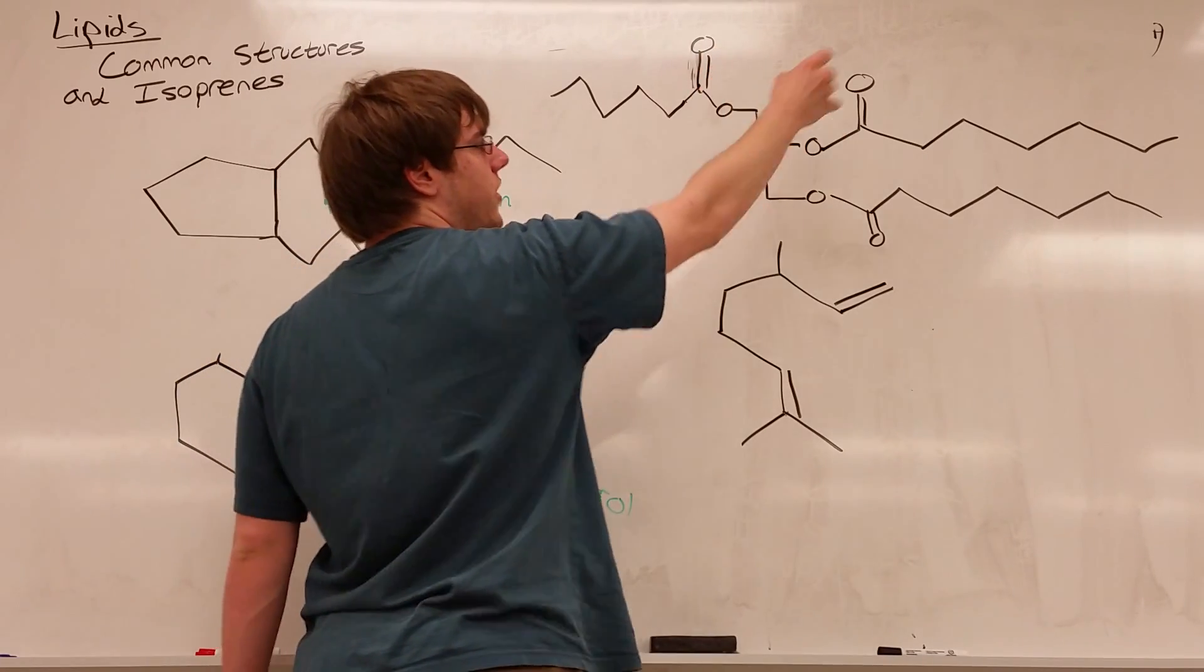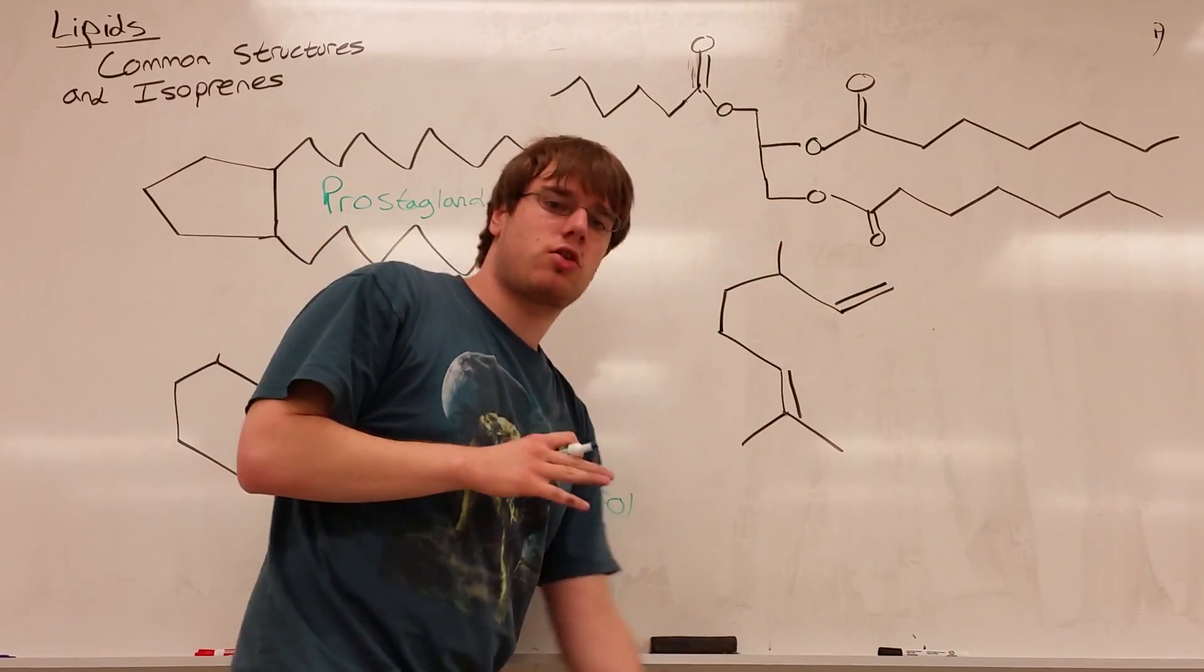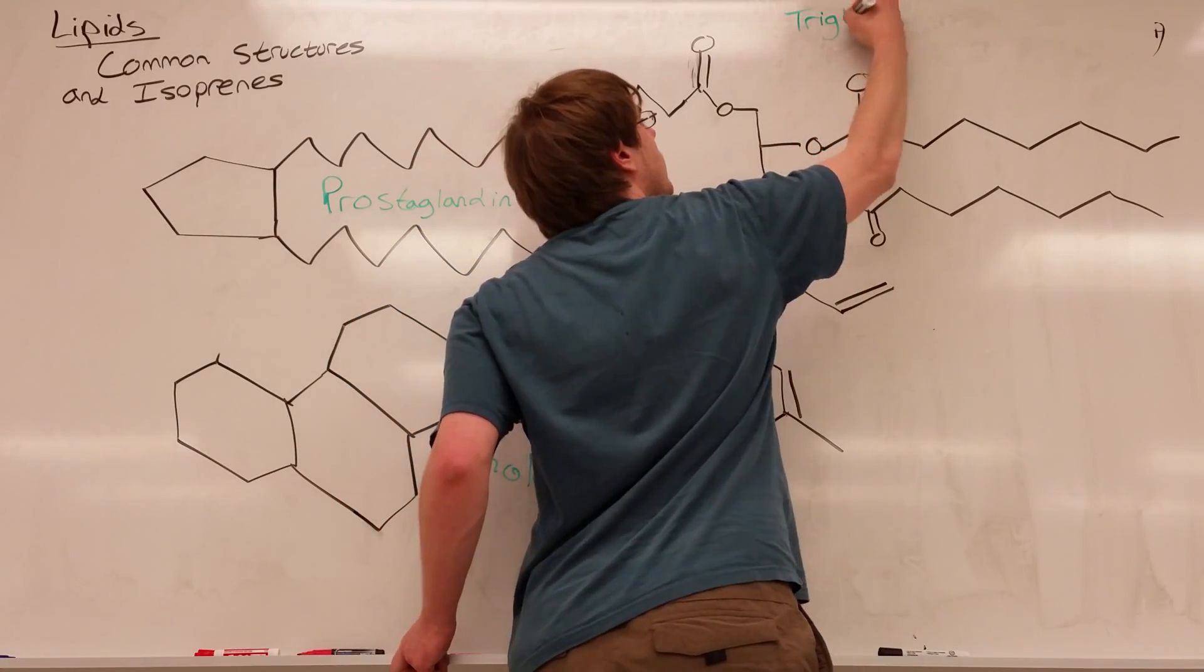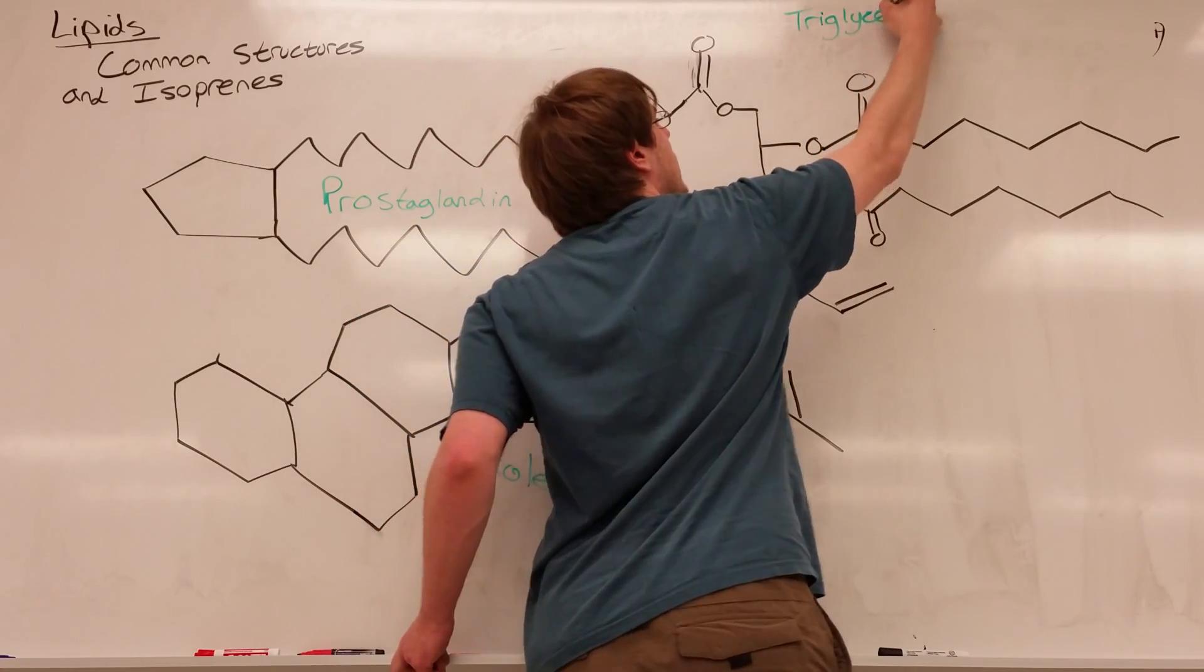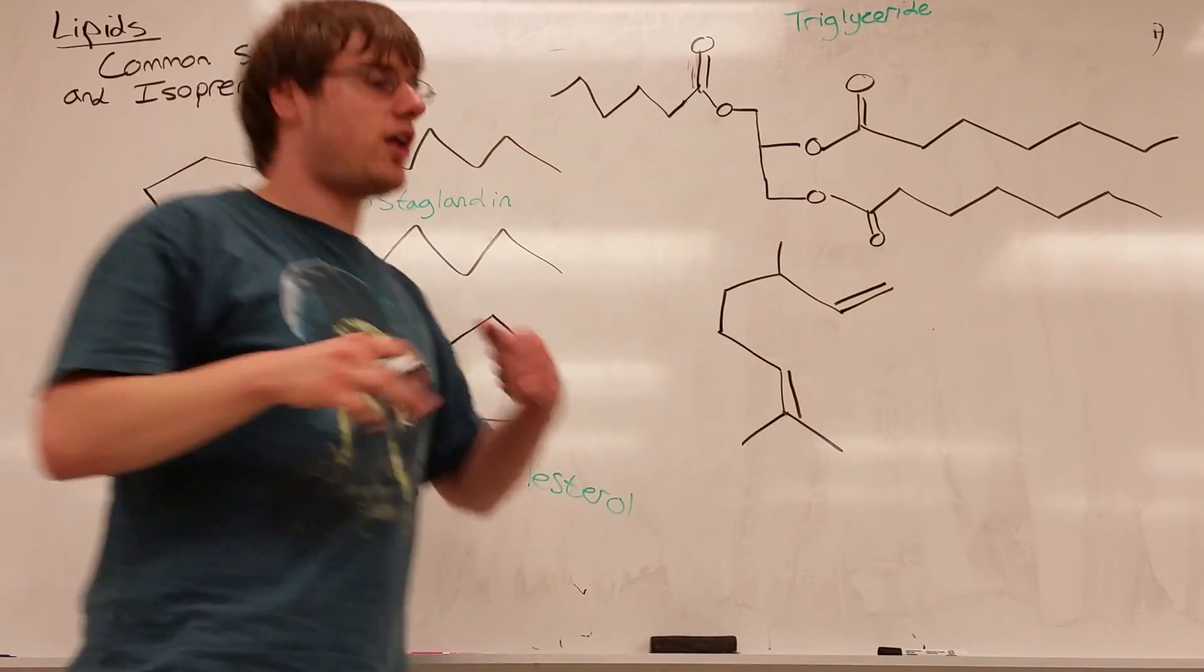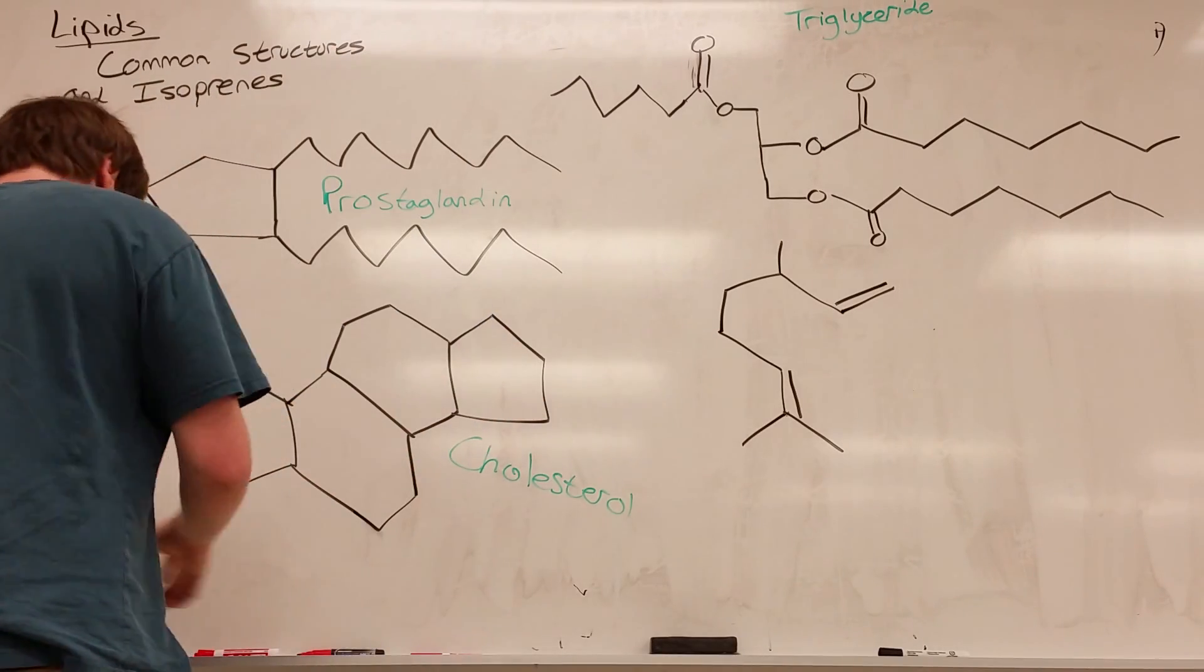If you ever see something that looks like a bunch of esters connected to one chain, this is your example of a triglyceride. Triglycerides are made up of fatty acids connected to a glycerol.